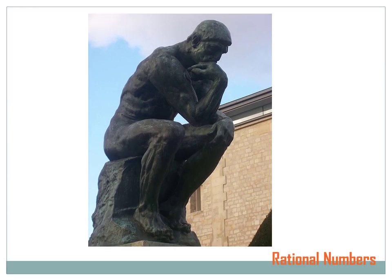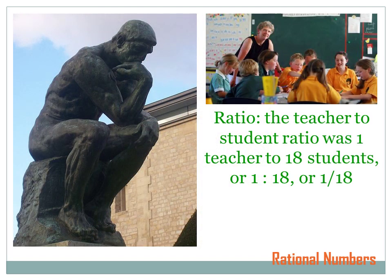Today we're going to talk about Rational Numbers. What does that mean, a rational number? Is it like a rational man who thinks a lot? No, that's not it. The word rational number comes from ratio. A ratio is a relationship of one subgroup to another subgroup. For instance, the teacher to student ratio was one teacher to 18 students, or it could be written 1 to 18, or 1 over 18, or 1 per 18.